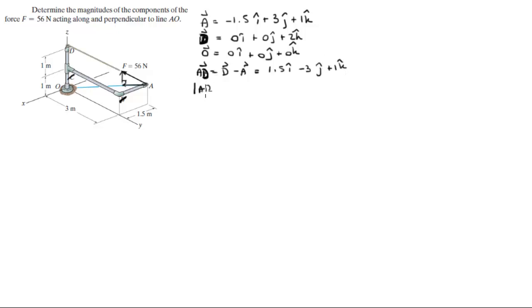The magnitude of this vector AD is found by doing the square root of the x component squared plus the y component squared plus the z component squared. So when you plug in these three values into this formula, you get that the magnitude is equal to 3.5.